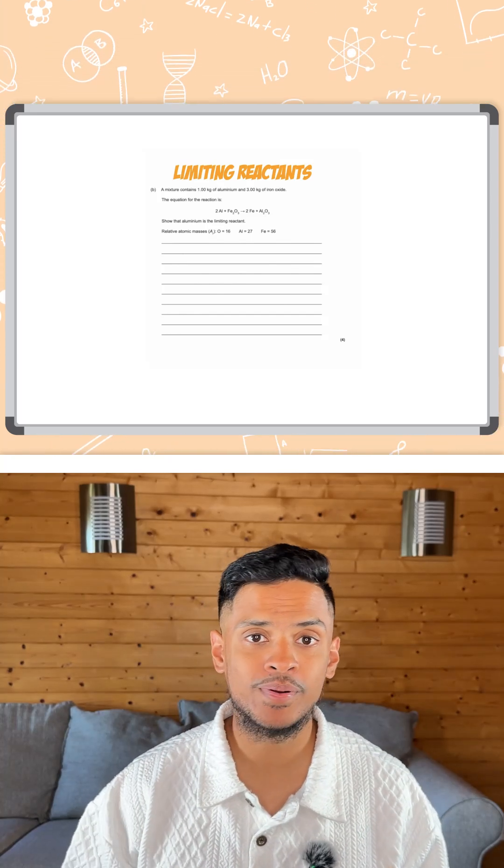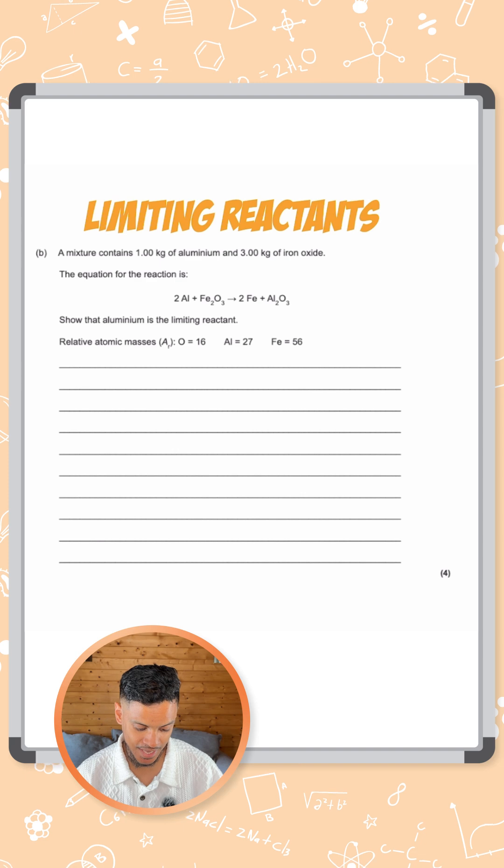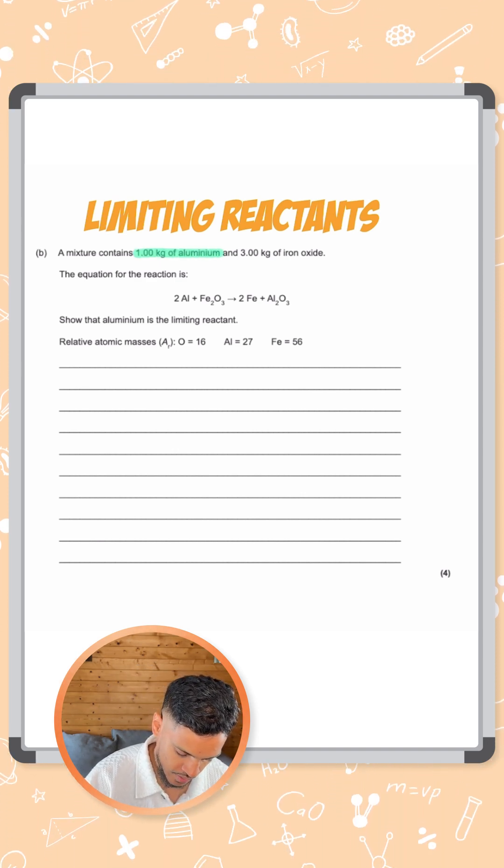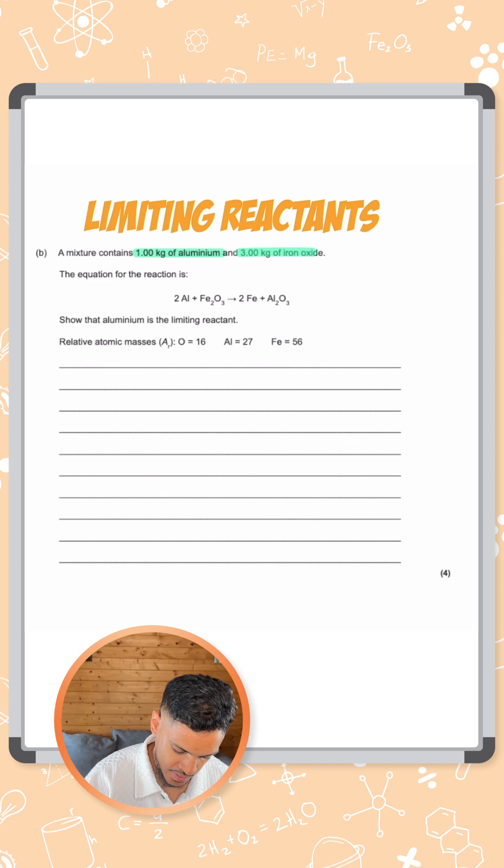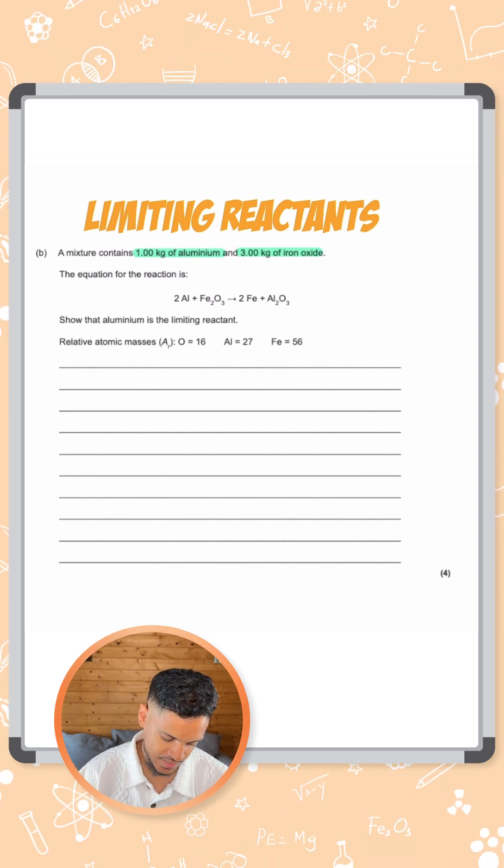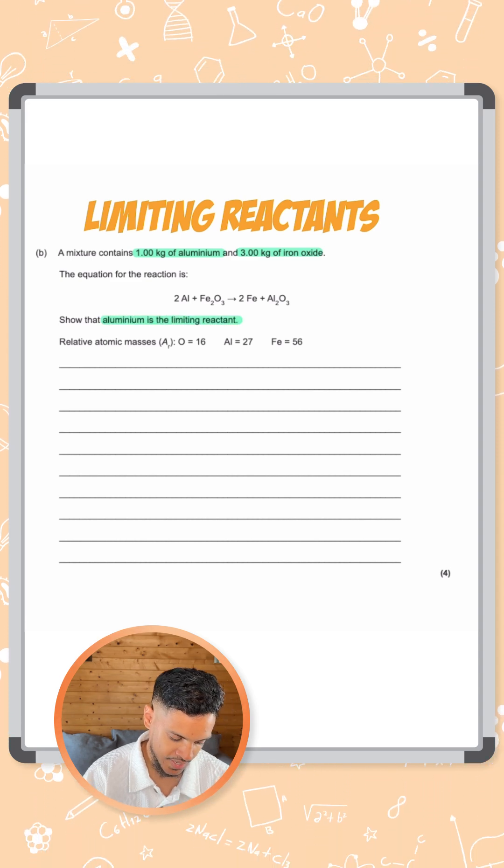This is probably the most complicated type of mole calculation you can get in GCSE chemistry. A mixture contains one kilogram of aluminum and three kilograms of iron oxide. The equation is given here and it says show that aluminum is the limiting reactant.